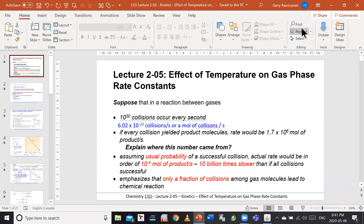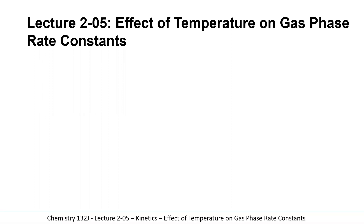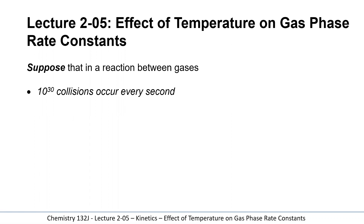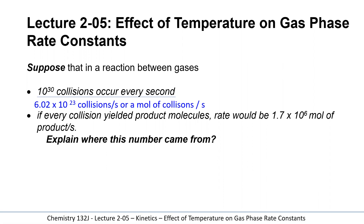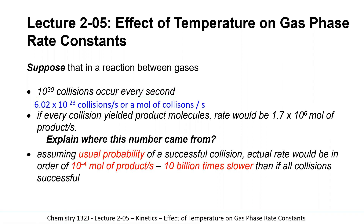Welcome everyone to lecture 2.05 on the effect of temperature on gas phase rate constants. Suppose in a reaction between gases we had 10 to the 30 collisions every second — an enormous number. If every single collision yielded a product molecule, the rate would be 1.7 times 10 to the 6 moles of product per second, an enormously large yield. Clearly that number is much smaller in reality. Many collisions happen without successful reactions — it's actually 10 billion times slower than if all collisions were successful. Only a fraction of these collisions result in chemical reactions.